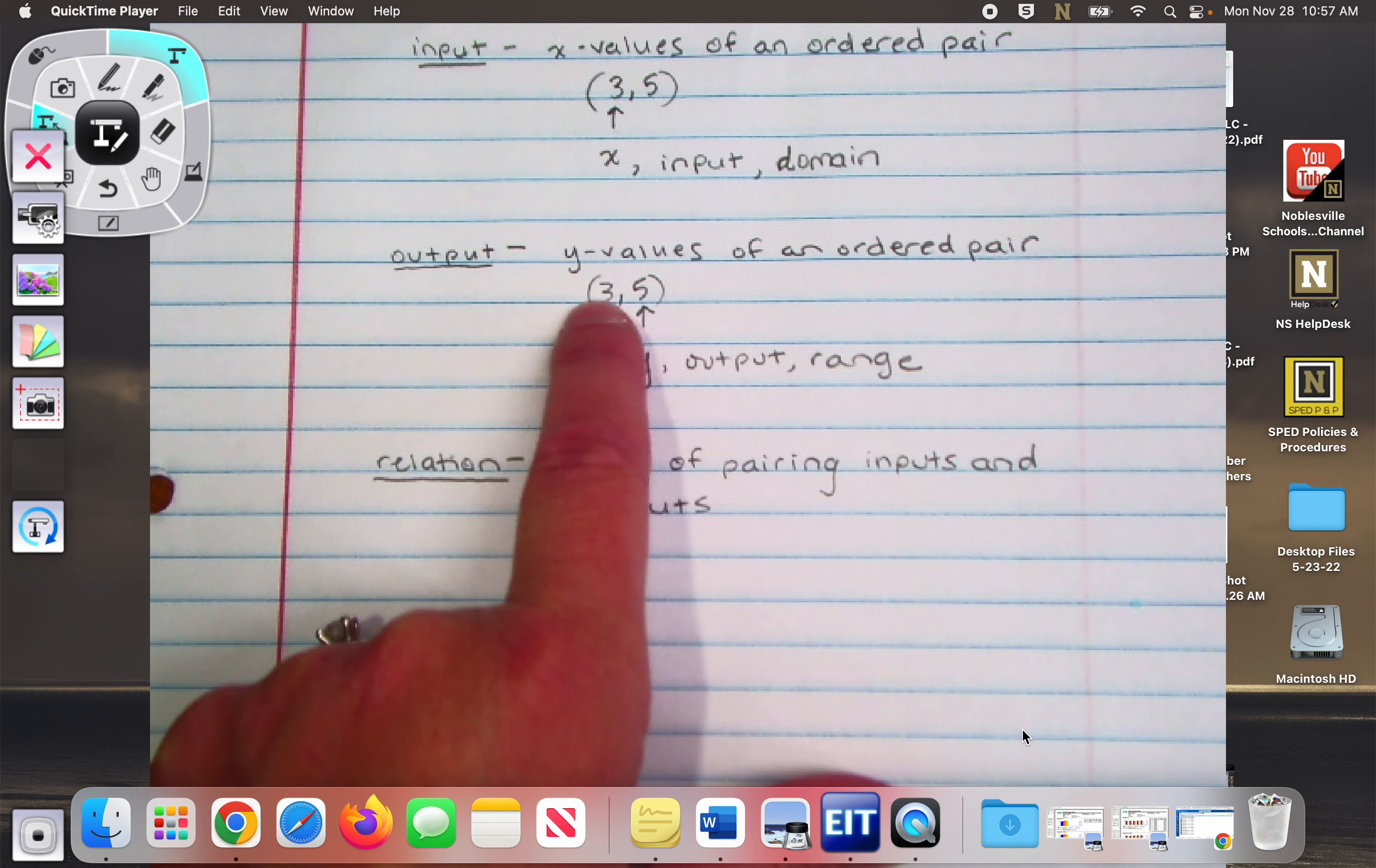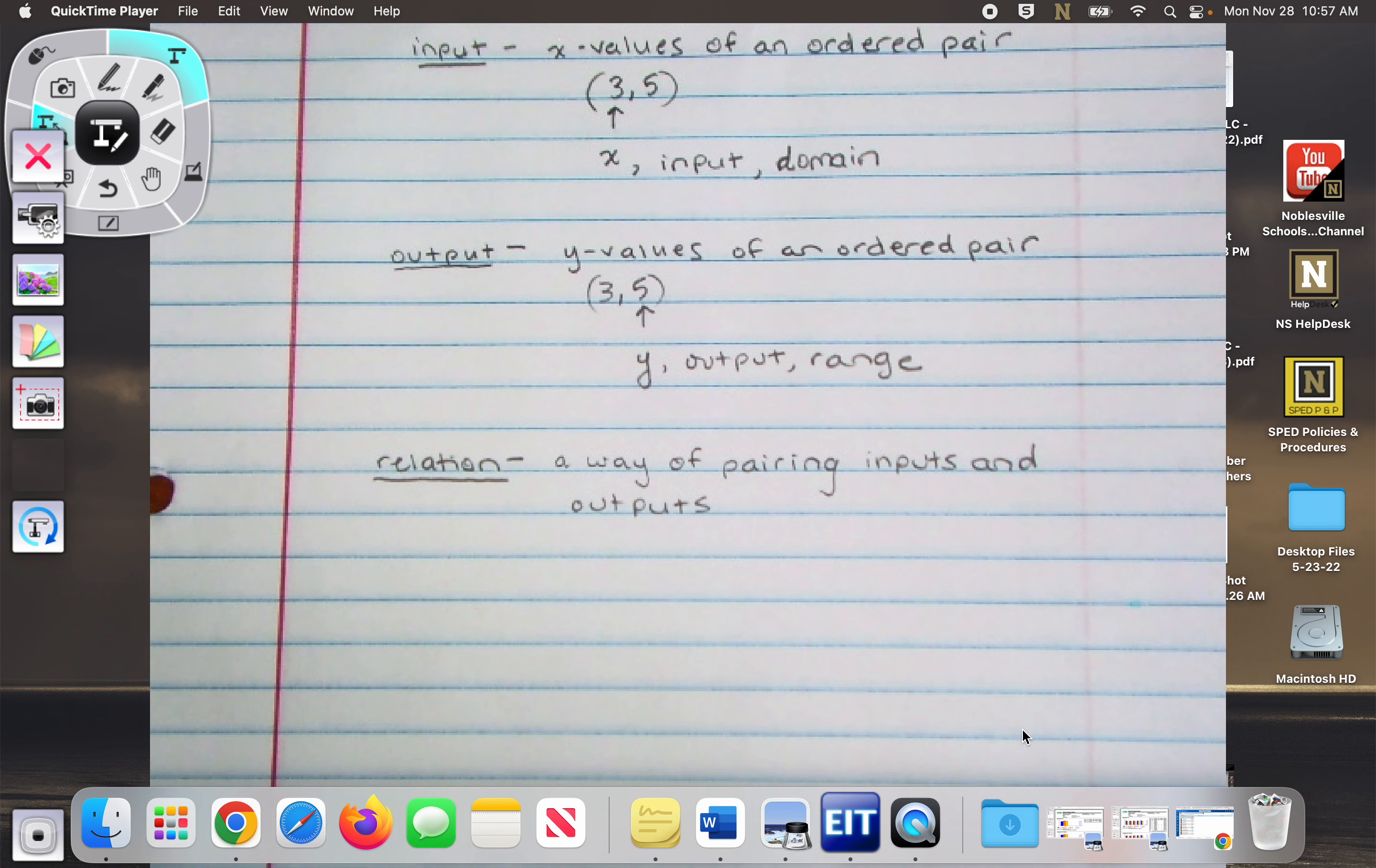And then when we're going to pair them up, we're going to get different ways to show that. One of them is an ordered pair, right? That's how we can, it has the word pair in it, right? Pairing, ordered pair. See what I did there? Yeah, smart.